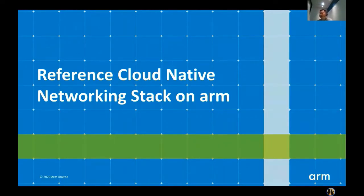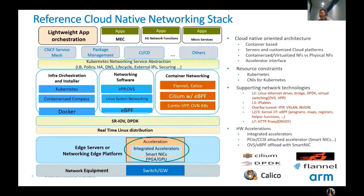The third part is a reference cloud-native networking stack on ARM. In this reference stack, we use hardware acceleration from SmartNIC or integrated accelerators. From the operating system network layer, we provide real-time Linux distribution with SR-IOV and DPDK support. From the orchestration layer, we provide Kubernetes orchestration for containers, containerized installers, and related tooling. For networking infrastructure software, we provide VPP, OVS, and Linux kernel networking with eBPF support.